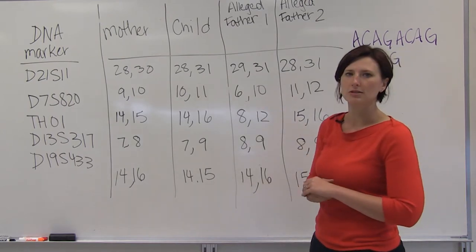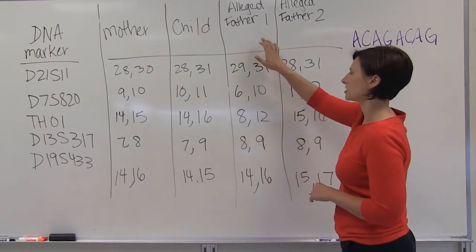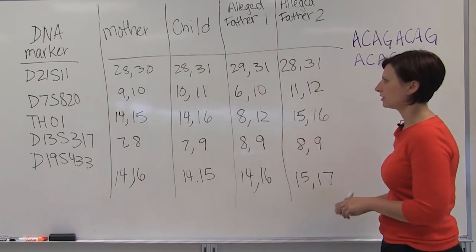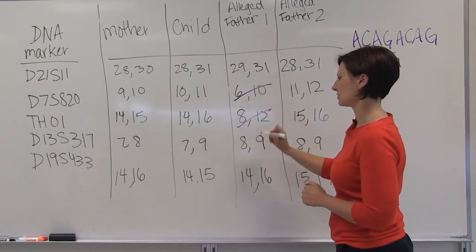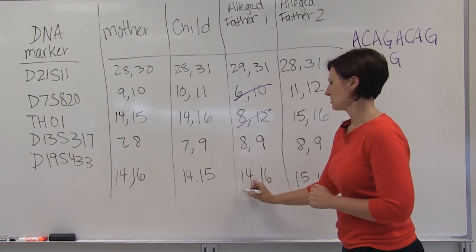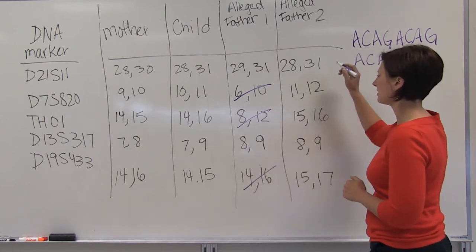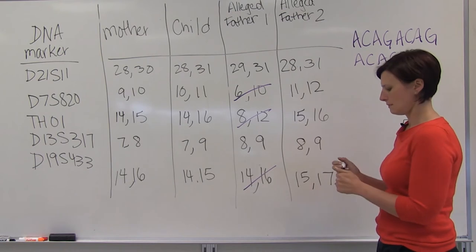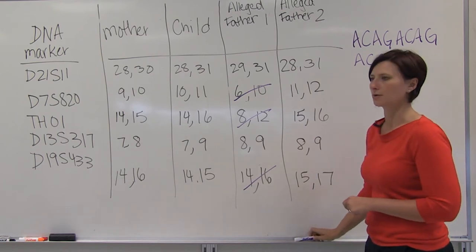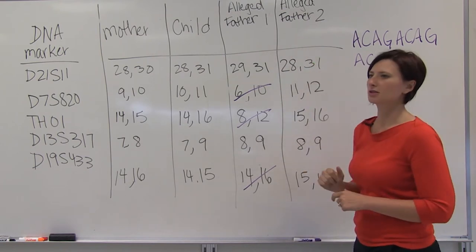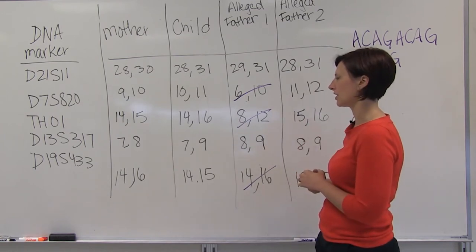So based on these five loci that we've looked at, alleged father 1 was ruled out by several loci, and alleged father 2 matches all the loci we're looking at. So alleged father 2 could possibly be this child's father.